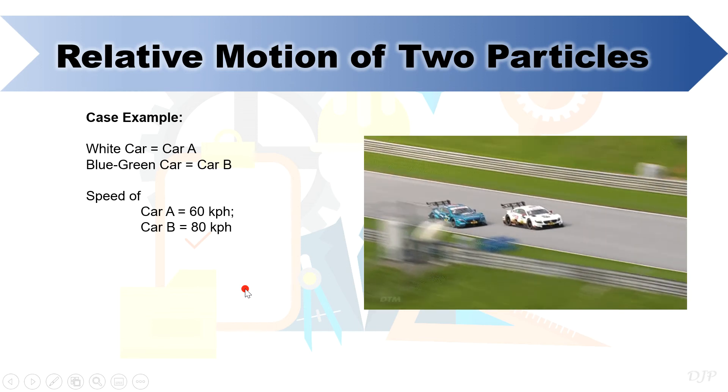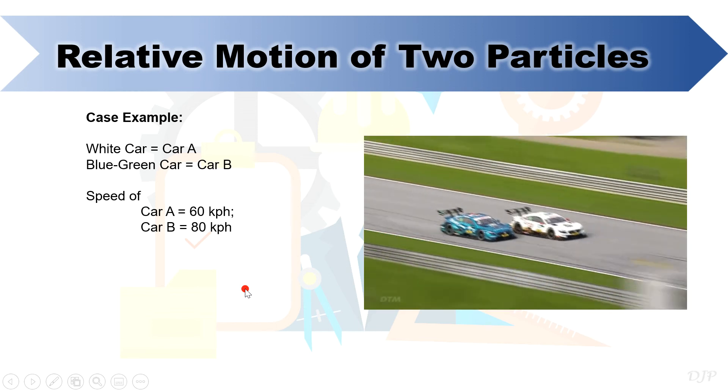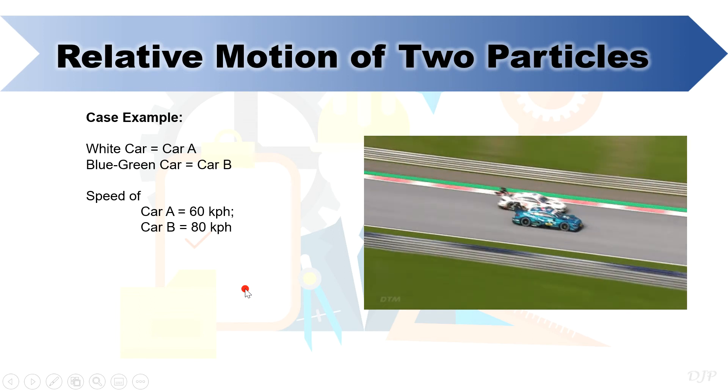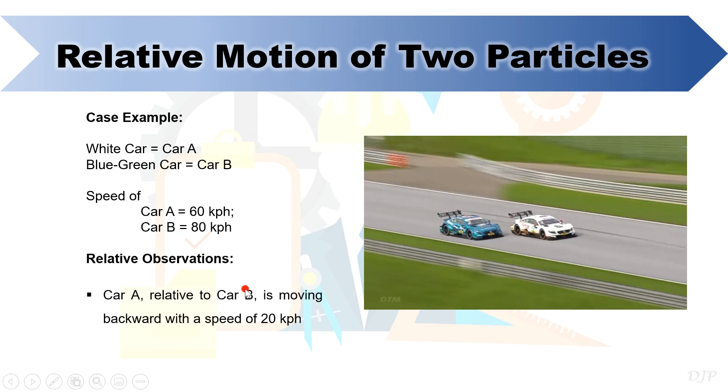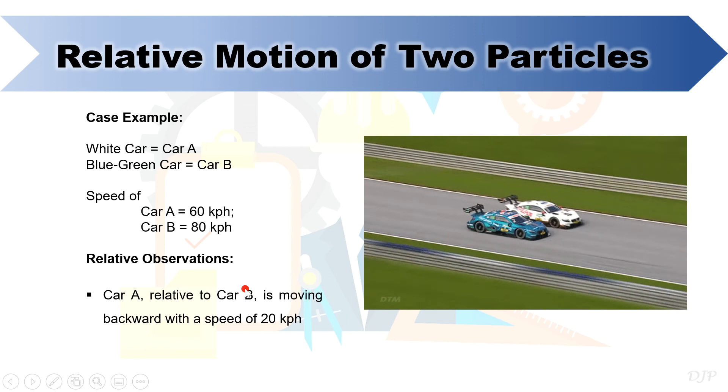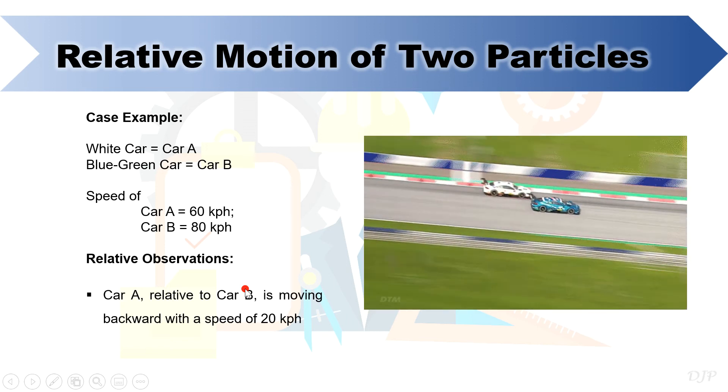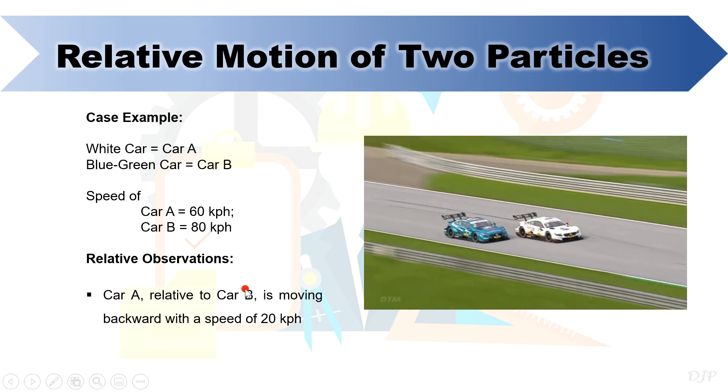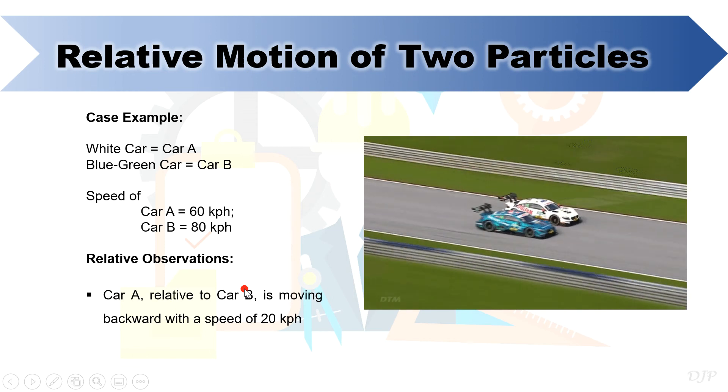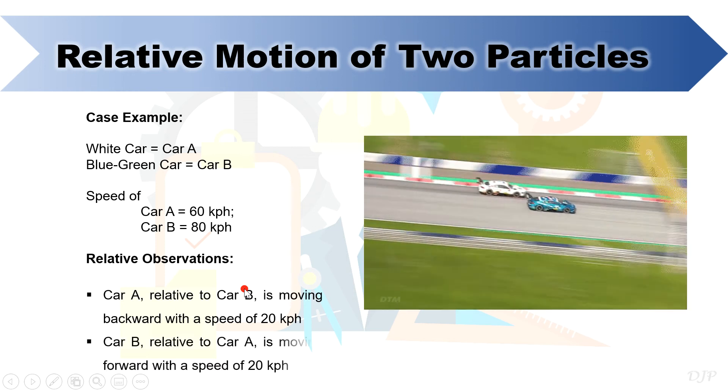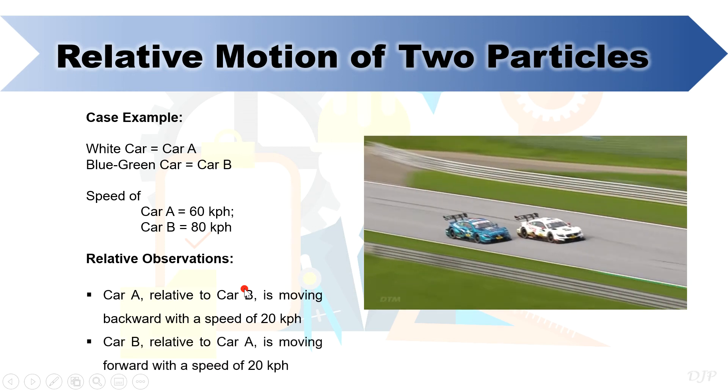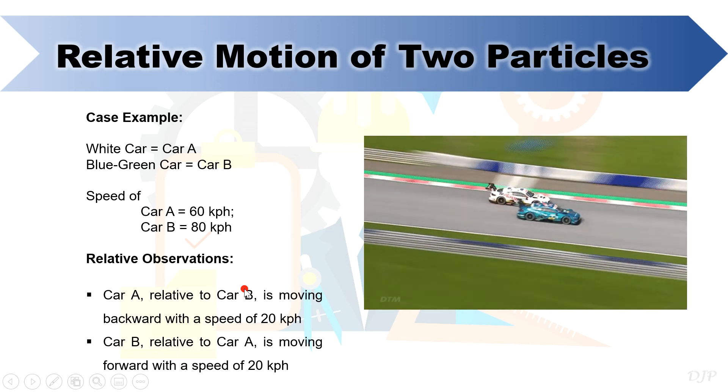Based on this case example, you can observe that car A is slower than car B, which means that if you are riding car B, you might perceive car A to be moving backward by 20 kph. Similarly, if you are riding car A, you might perceive car B to be moving towards you at a rate of 20 kph.